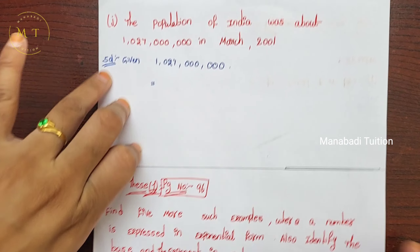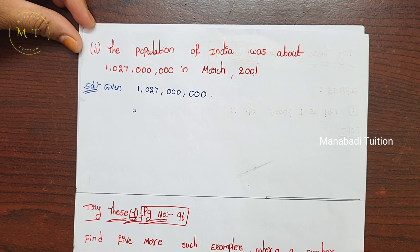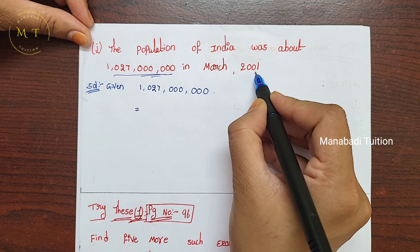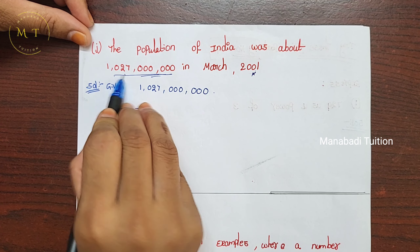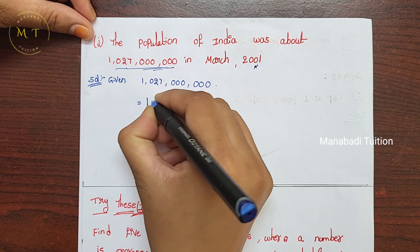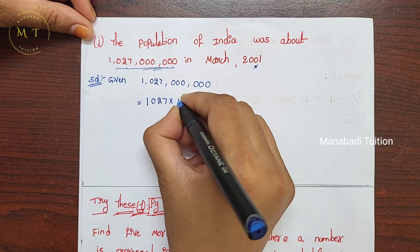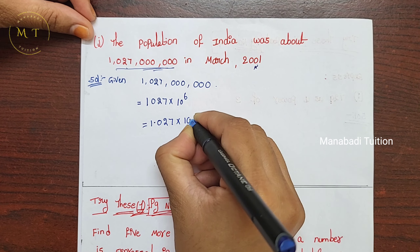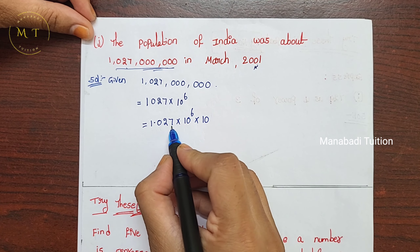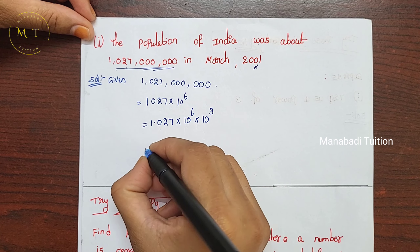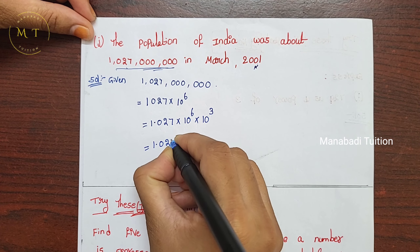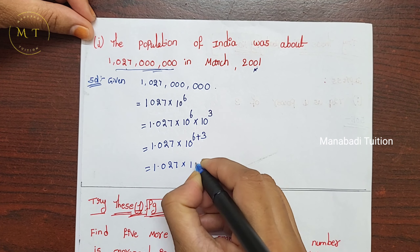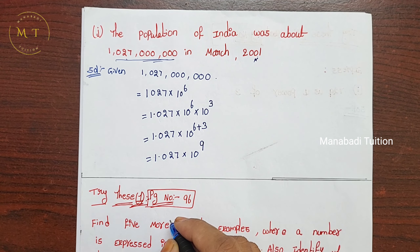Last one, part J — the population of India was about a given number in 2021. Write the number: 1027 with 6 zeros, so 10 power 6. The number is 1.027. There are 3 digits before the point, so multiply by 10 power 3. Add exponents: 6 plus 3 equals 9. The answer is 1.027 into 10 power 9.